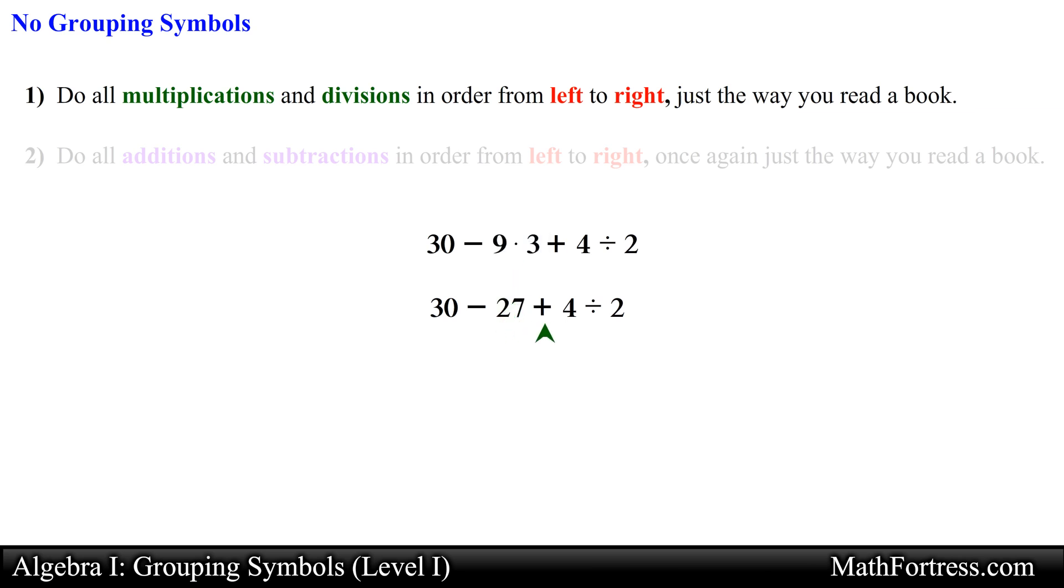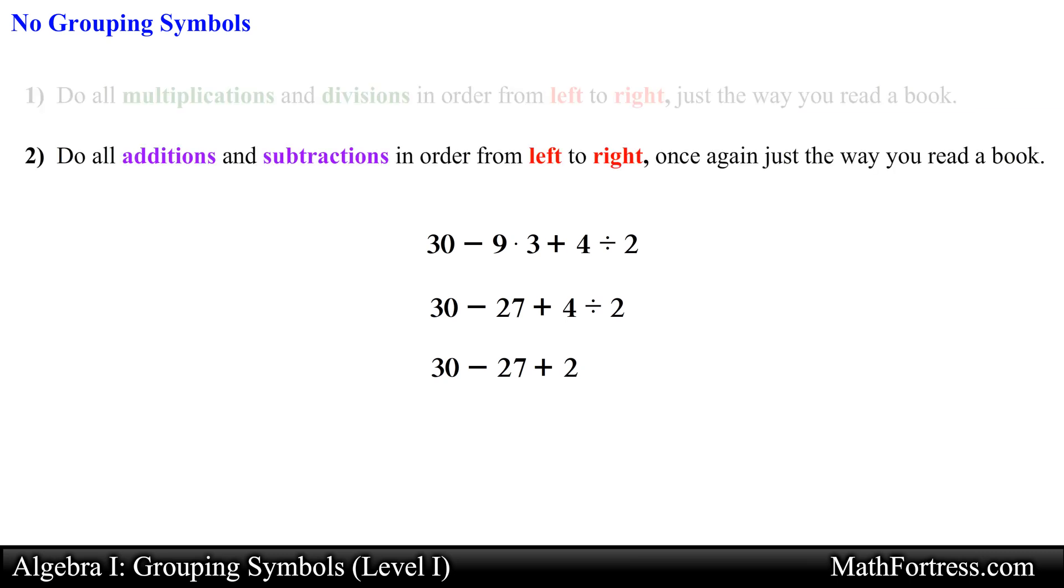Then we continue scanning from left to right and find a quotient, so we simplify that and obtain the following. Now that all multiplication and division operators have been simplified and taken care of, we scan the expression once more looking for addition and subtraction operators, and signifying them along the way.